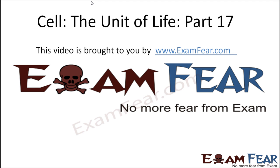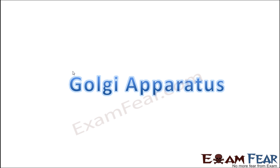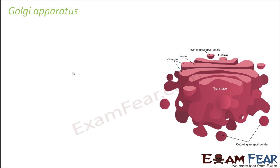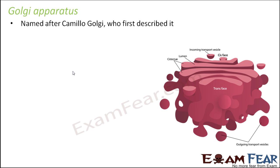Hello friends, this video on cell the unit of life part 17 is brought to you by examfear.com. The next cell organelle we are going to talk about is Golgi apparatus. The name might be a little weird to you — basically it was named after the scientist Camillo Golgi, who described it for the first time. Since then it is called Golgi apparatus, also termed Golgi bodies or Golgi complex.